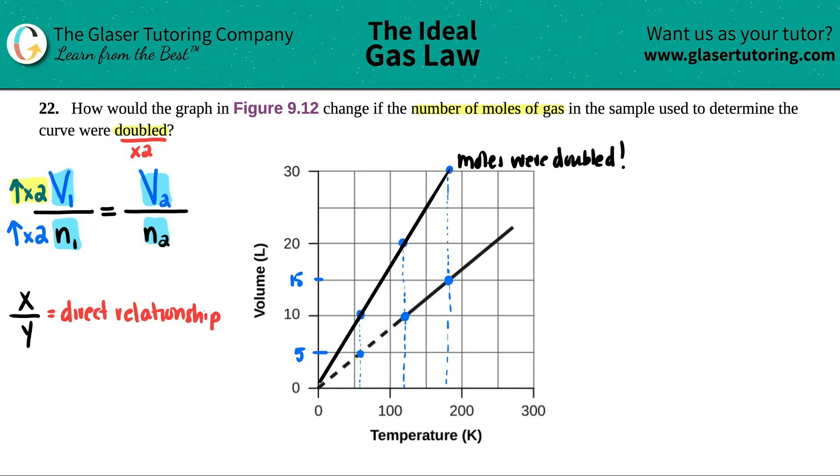So you could say that volume will be doubled, volume will be doubled if temp is constant. And then another way to say this is that the slope is also doubled as well.